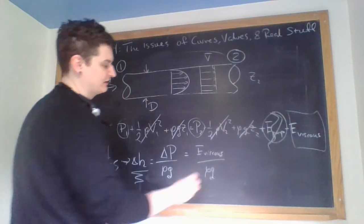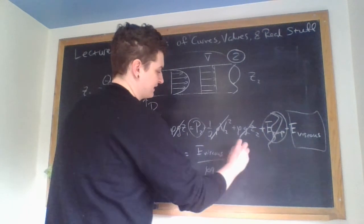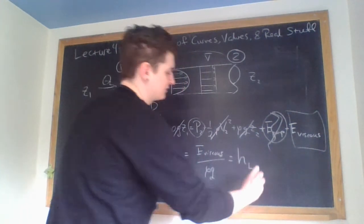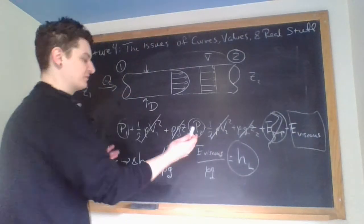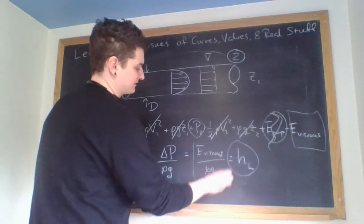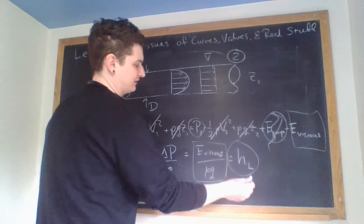So, that's also just rho G if we just divide the whole thing. And then we just call this thing the head. This is the head loss. They're both really head losses, but this expression right here is a head loss.